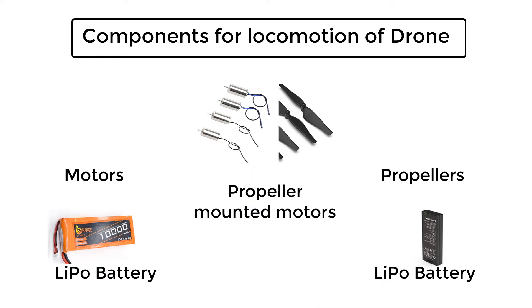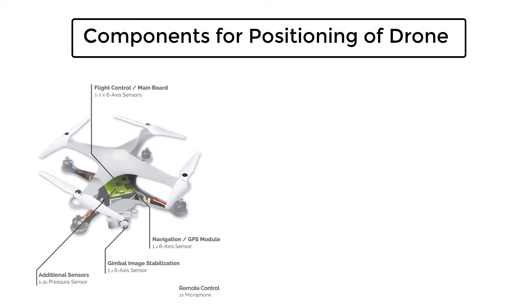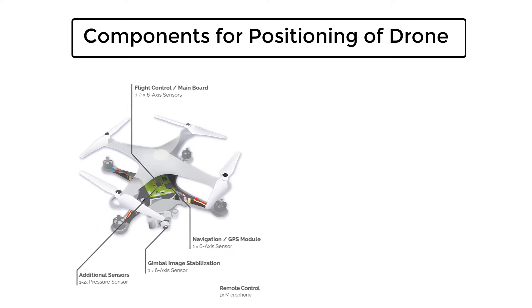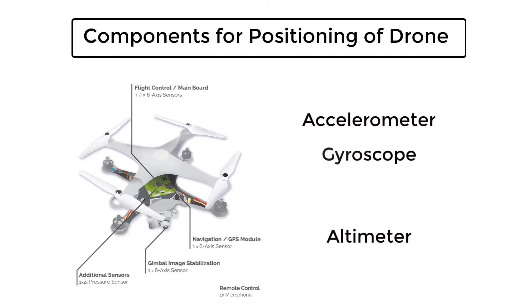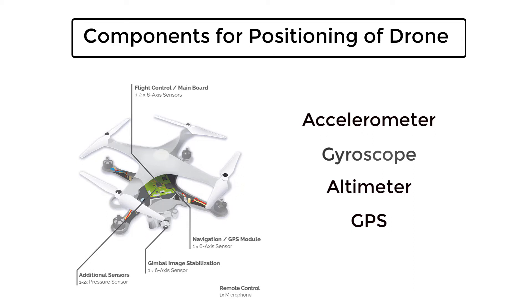To accurately measure the drone's position while it is hovering, there are various onboard sensors like accelerometer, gyroscope, altimeter, and GPS, which help in analyzing the drone's position in different axes and at what speed the drone is flying.